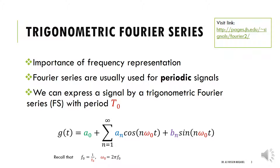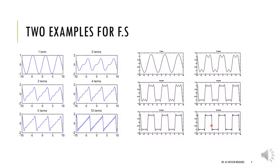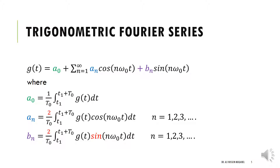Here are two examples to illustrate the Fourier series. With a one-term approximation, only one trigonometric function is used. As we increase to two, three, four, or five terms, we get closer to the desired signal. For example, to represent a train of square signals: one term is the first approximation, two cosines gets us closer, and with three, four, five, or twelve terms, the result converges toward the square wave.